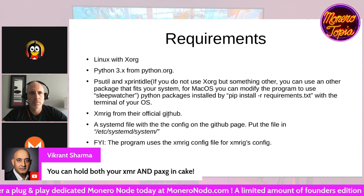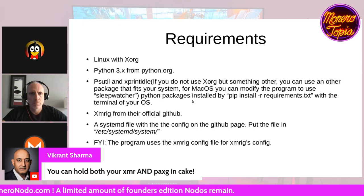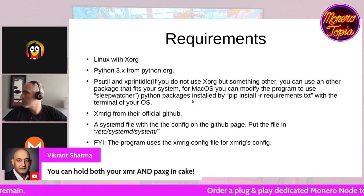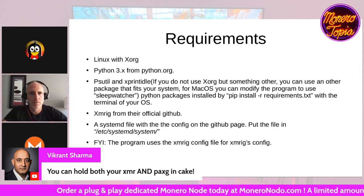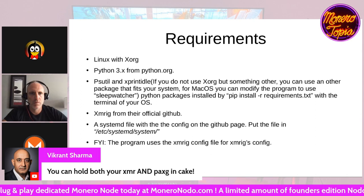Download XMRrig from their official GitHub and preferably use systemd. If you don't want to, you can use the Python command with an export environment variable. It uses an env variable, which I'll show on my other screen in a moment.